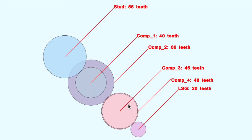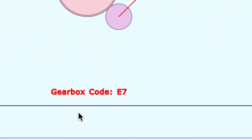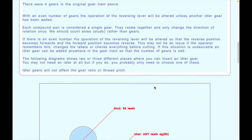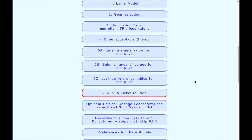Here we have our two compound gears illustrated. A large 56-tooth stud gear drives the smaller of the first compound pair; the larger of that compound pair (the 40 and 60 joined together) then drives the second compound pair, whose larger 48-tooth gear drives the lead screw. The smaller gear there is 46 teeth - very close in size to the 48. Going back to the table, gearbox setting E7 is required. No obvious problems are found, but the program still shows the different places you can add an idler gear if you wish.